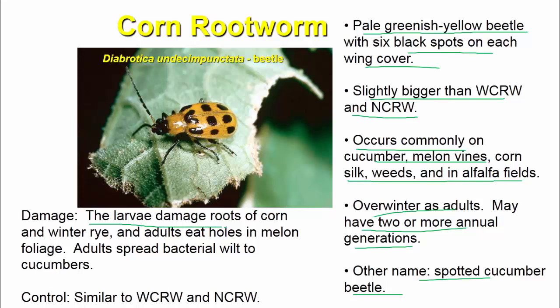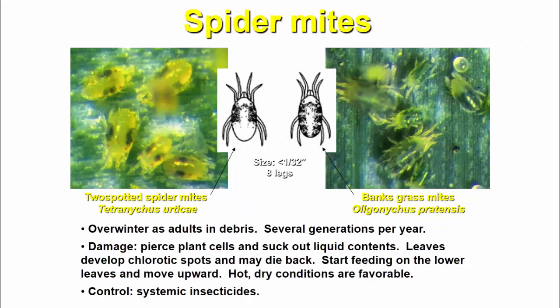The larvae damage roots of corn and winter rye. Adults eat holes in melon foliage. Adults also spread bacterial wilt to cucumber. Control is similar to the western and northern corn rootworm.